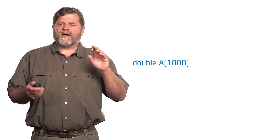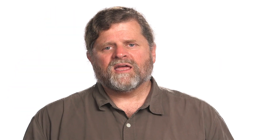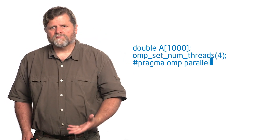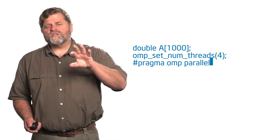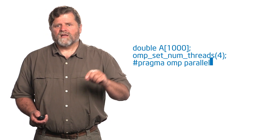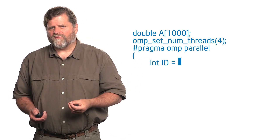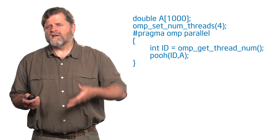Here's a sample program where I declare an array — double A of 1,000 — and then ask for a number of threads using OMP_set_num_threads. This is a runtime library routine: it requests a number of threads. I've written right into the code that I'd like four threads. Then pragma OMP parallel says fork a number of threads — I asked for four, so we'll try to fork a team of four. Each thread runs the code in that structured block, allocates an integer ID, calls OMP_get_thread_num to get the ID, and then calls function foo for that ID, taking in the array A.